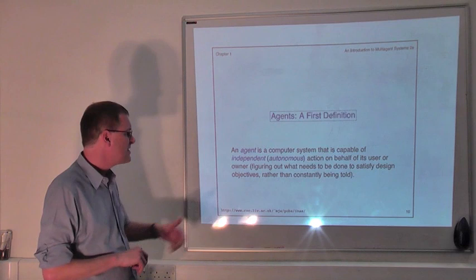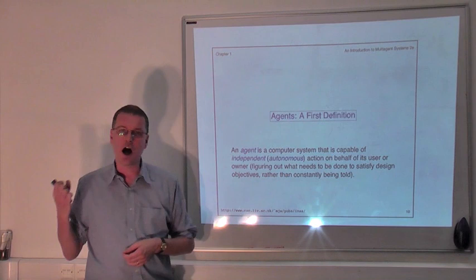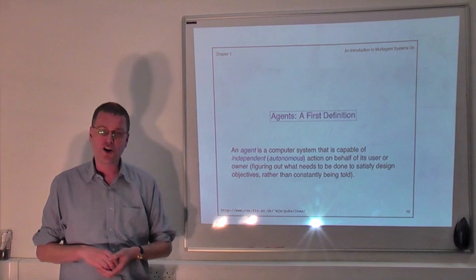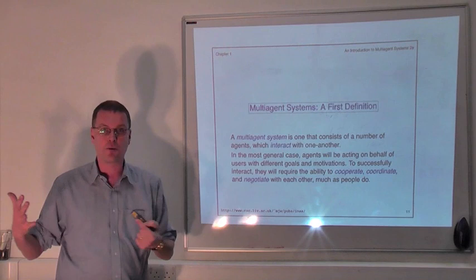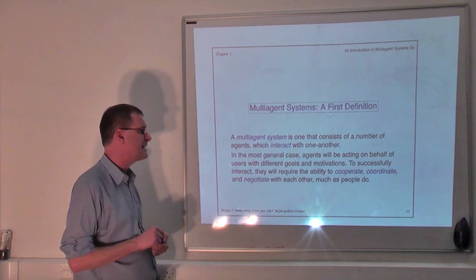So when we think about an agent, we're thinking about a computer system which is acting on our behalf. It's acting to carry out some delegated task on our behalf and it's doing this in some kind of semi-autonomous, semi-intelligent way. And very often that agent will have to interact with other agents that are acting on behalf of other people. And when you put those agents together, what you get is a multi-agent system.